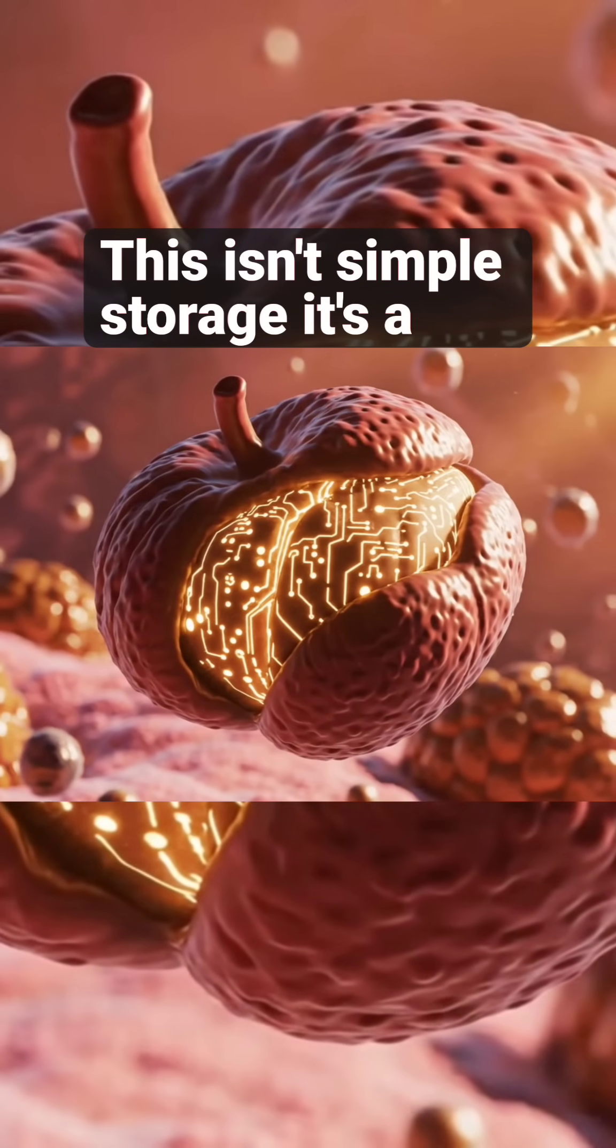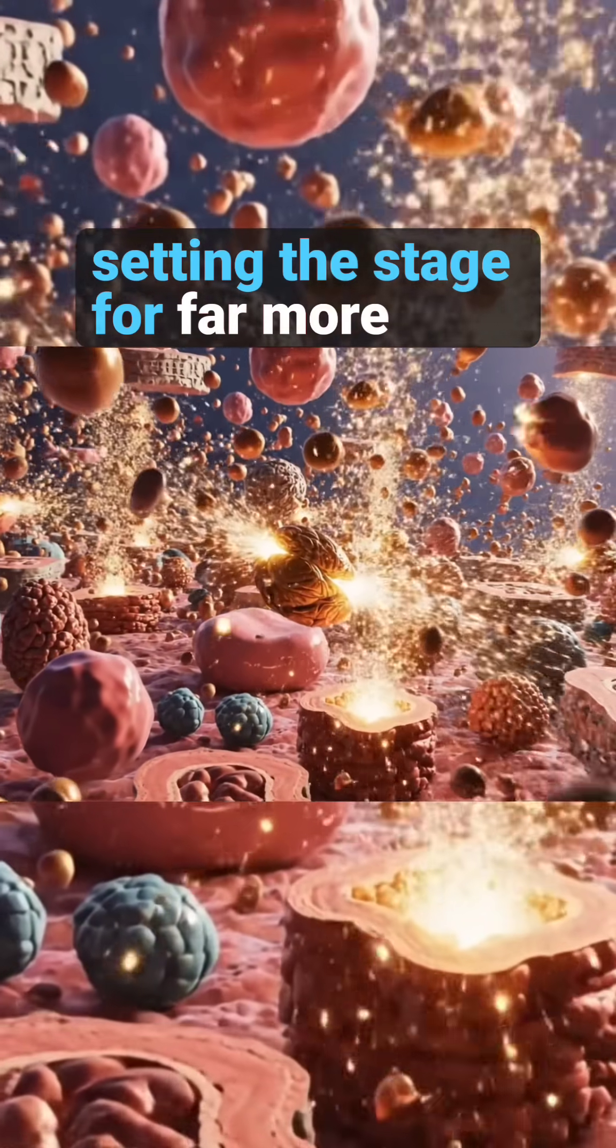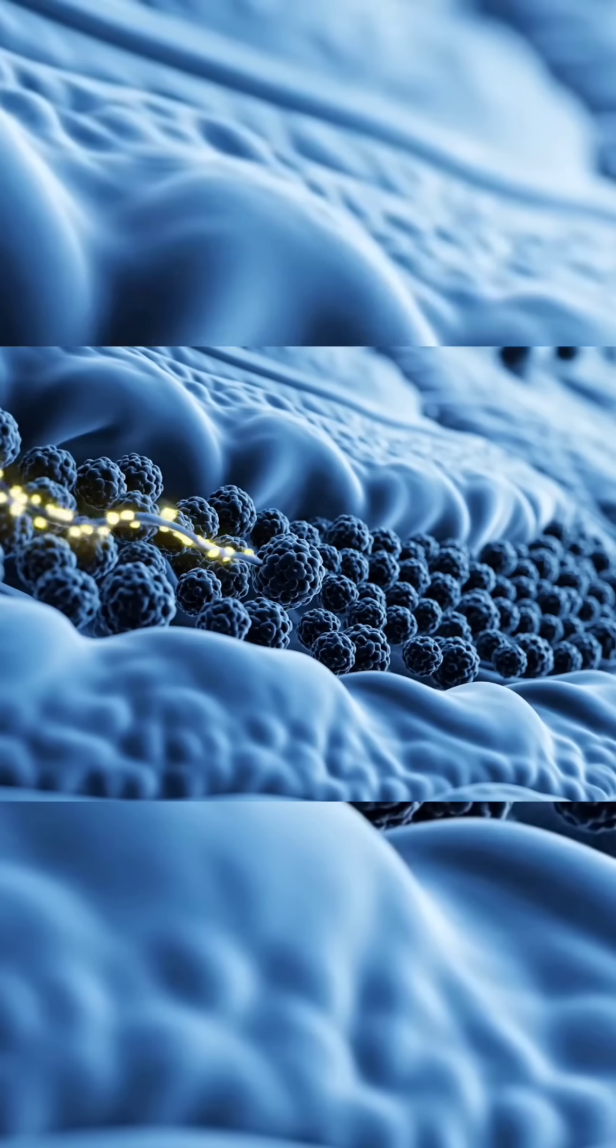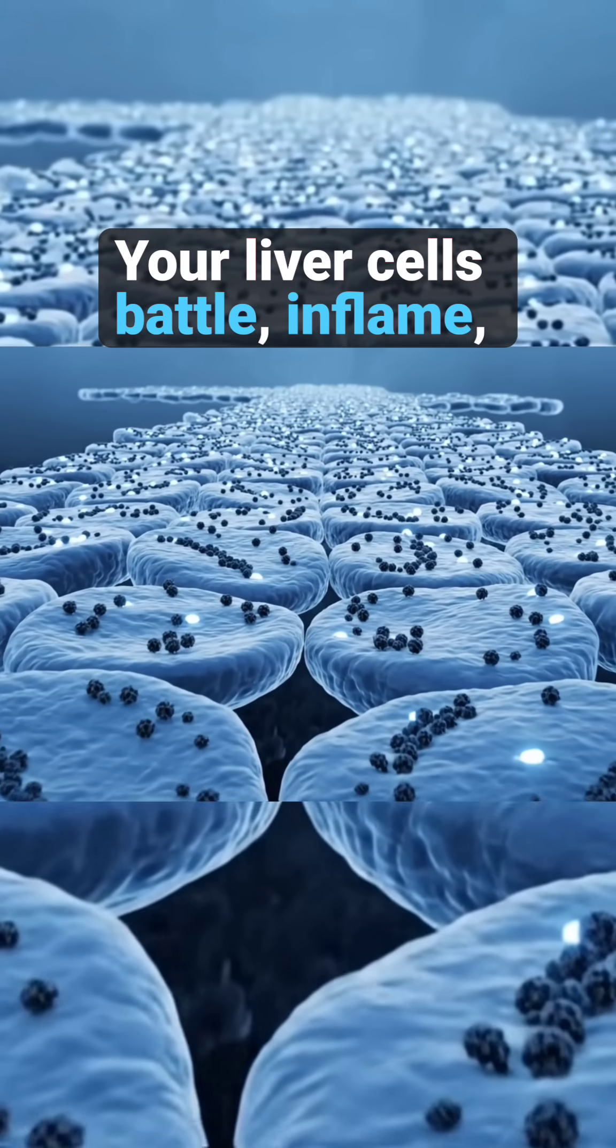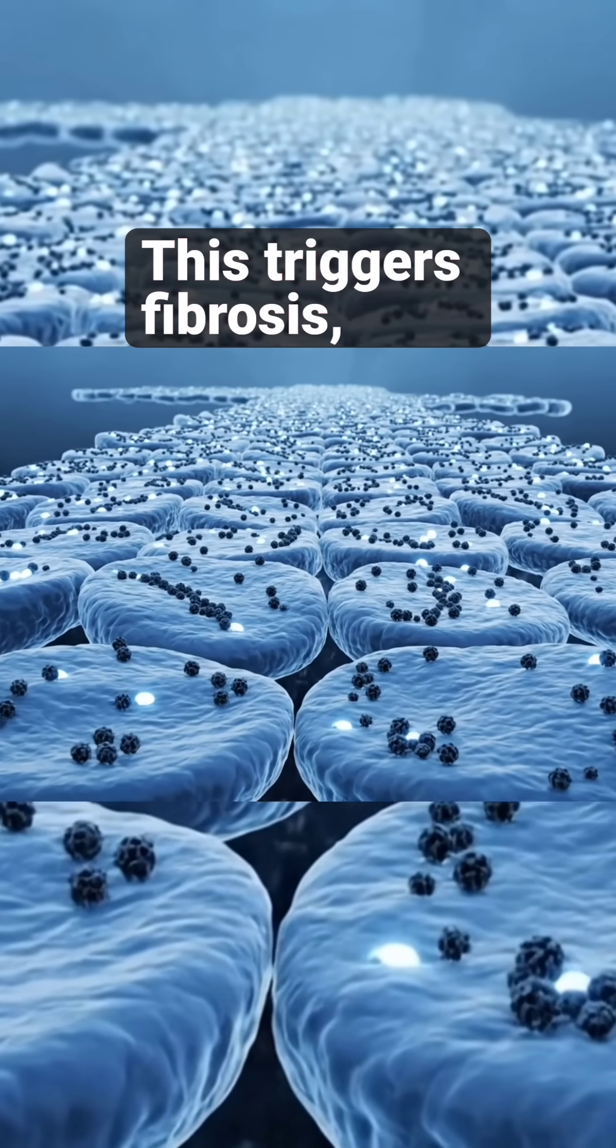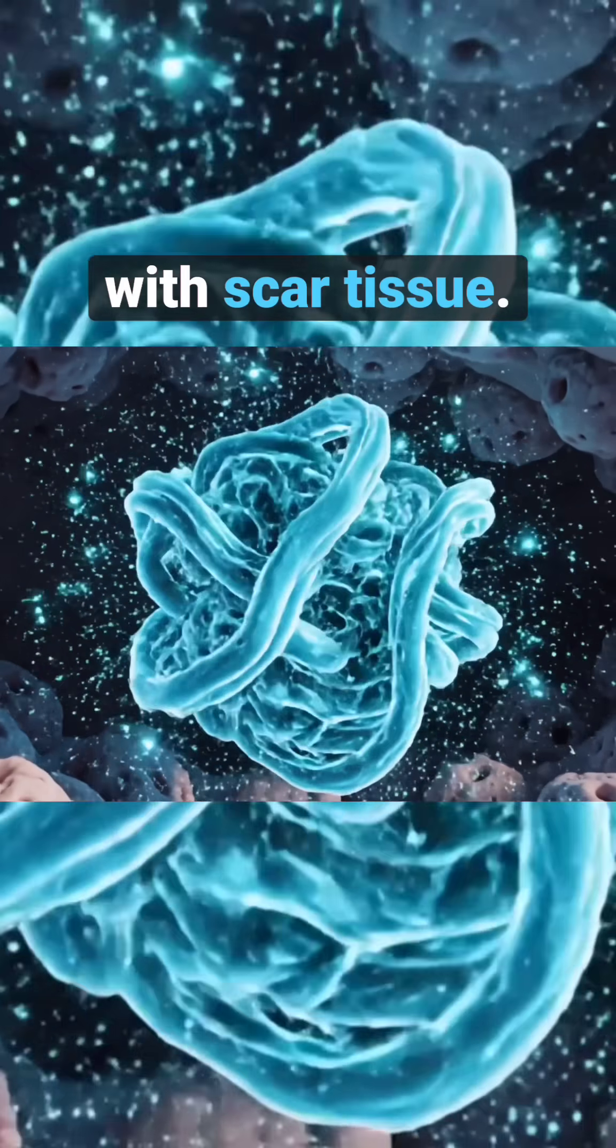Then the sludge turns toxic. Your liver cells battle, inflame, and start dying, NASH. This triggers fibrosis, a desperate attempt to heal with scar tissue.